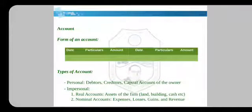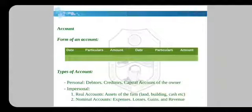This is a form of account. There are two dates, two particulars, and two amounts, so in this way we are keeping two entries. The left-hand side shows the debit and the right-hand side shows the credit. Date shows the date on which the transaction is made. Particular shows the information about the account, and amount shows the amount credited or debited.